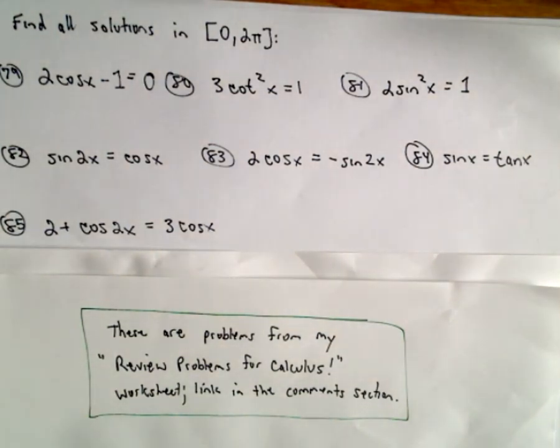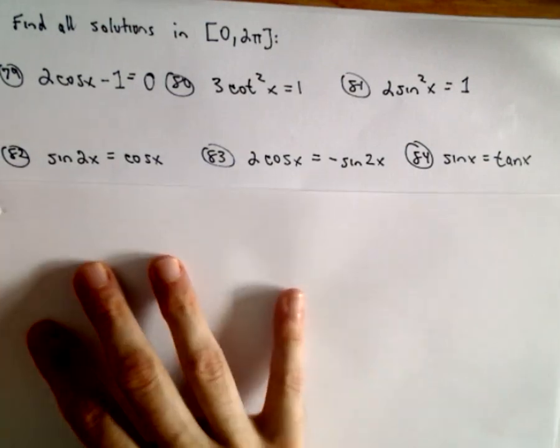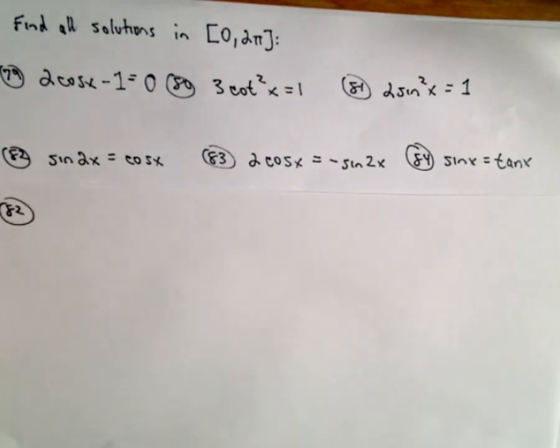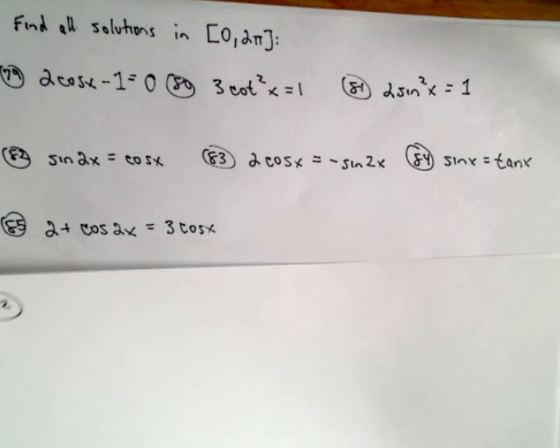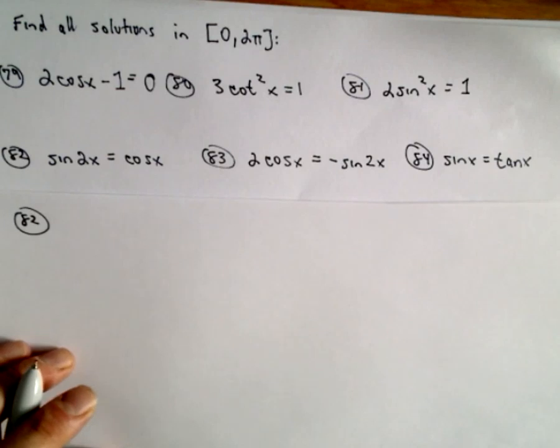Okay, so a few more trig equations. Let's do 82 and 83 in this video, and actually 84. Problem 85, you're all going to use identities. Probably 82, 83, 84 are going to be pretty similar in nature.